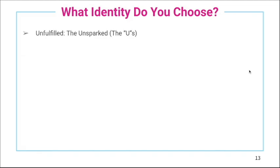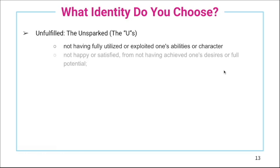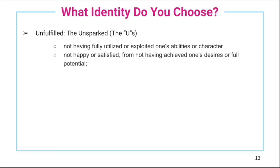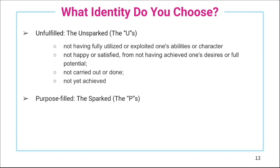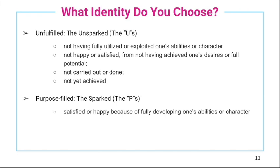So what identity do you choose? The Unsparked — never having fully utilized one's abilities or character. That's unfulfilled: you're not happy or satisfied because you haven't achieved your full potential. There's a full potential inside you that is untapped — it comes from desire. When you match desire with what you do every day, that's when you reach your full potential. The Sparked are the Purpose-Filled: satisfied and happy because they've fully developed their abilities and character.